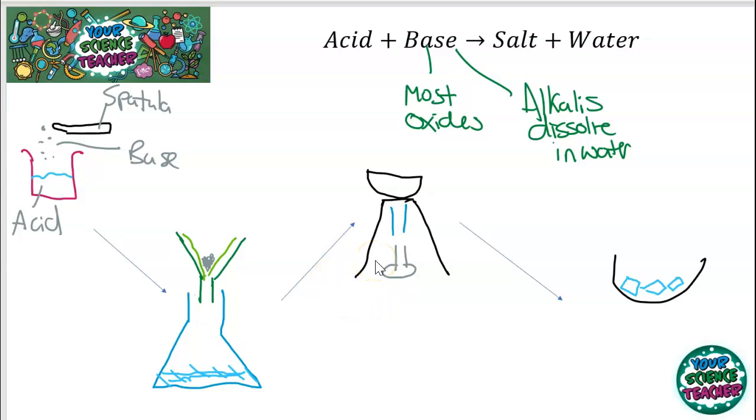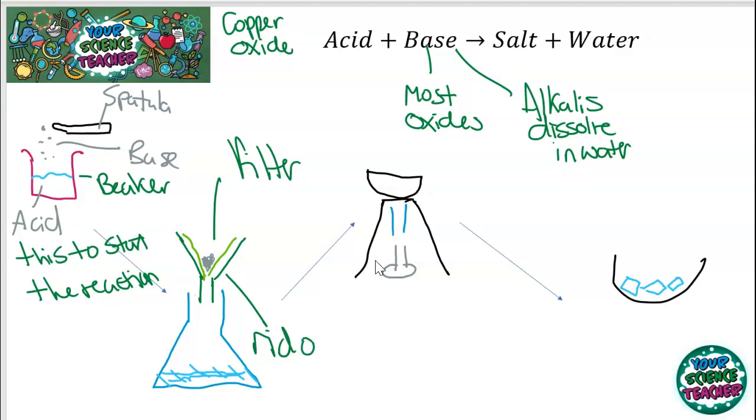So, if you were to look at a reaction of copper oxide and add it to sulfuric acid, you would make copper sulfate and water. Now, how you carry out this practical in theory is like this. It's a four-step method. The first thing you'd need to do is add the oxide with a spatula to the acid in a beaker. And in each step, if you've got a method question, you always need to explain why. And this is to start the reaction. And you'd always add the base in excess to the amount of acid that you've got. Because you add it in excess, what you need to do then is filter out. And this gets rid of any unreacted solid.